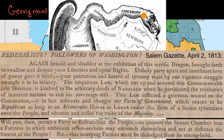Now, here's a newspaper article from the Salem Gazette in 1813 that talks about how the Federalists felt about that first official gerrymandering — in response to Elbridge Gerry signing the bill that created the salamander-shaped district advantaging the Democratic Republicans against the Federalists. It reads: 'Federalists, followers of Washington, again behold and shudder at the exhibition of this terrific dragon, brought forth to swallow and devour your liberties and equal rights.' You can see in the picture it actually does look like a dragon — they put wings on it. 'Unholy party spirit, an inordinate love of power gave it birth.'